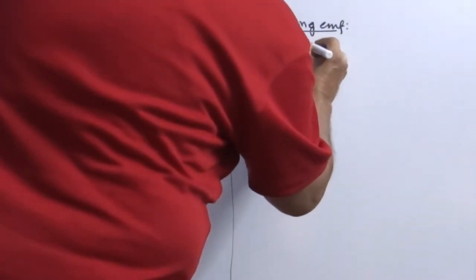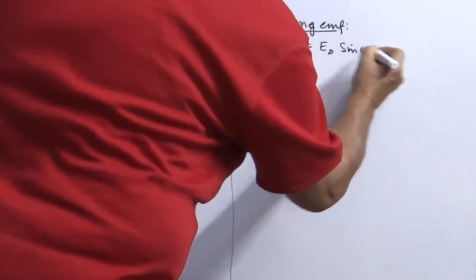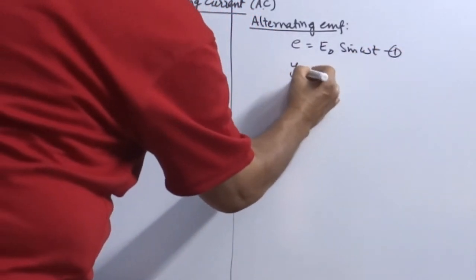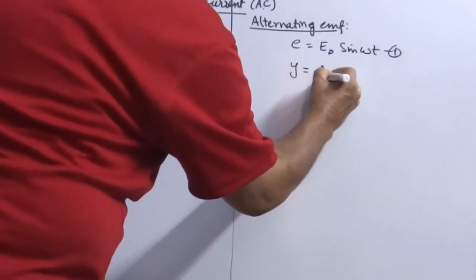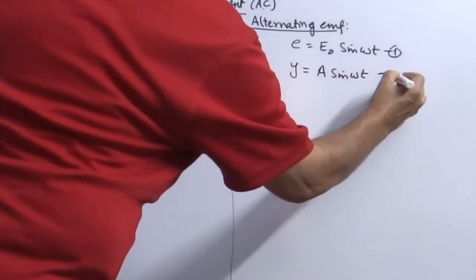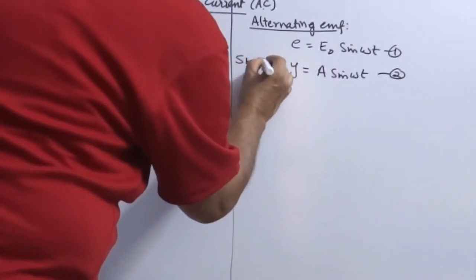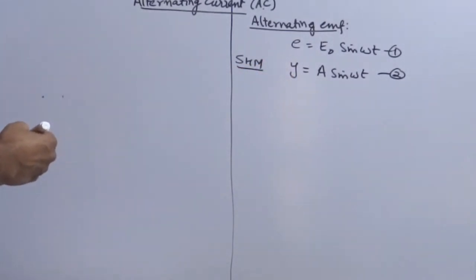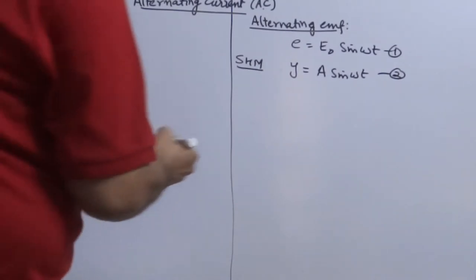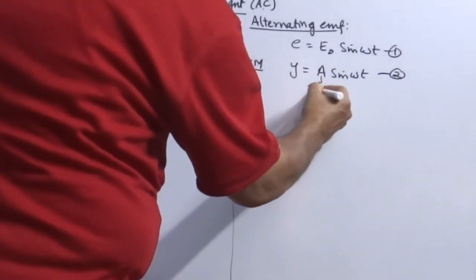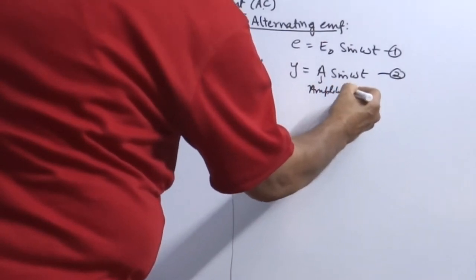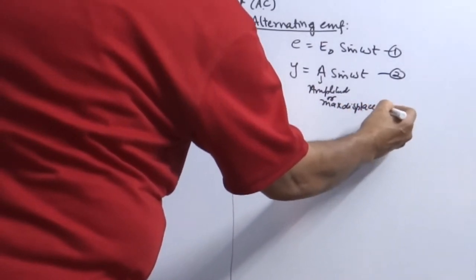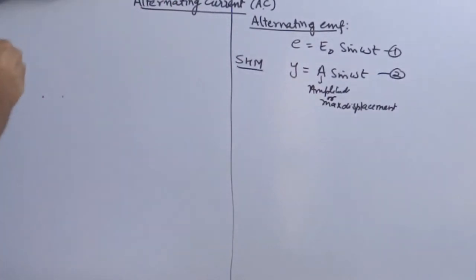This EMF is written as E = E₀ sin(ωt). This equation is similar to Y = A sin(ωt), the SHM equation which you have done in class 11. What was Y? Instantaneous displacement, or displacement of a particle at any time. A we call it as amplitude, or maximum displacement covered. Similarly, it is here.